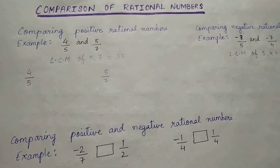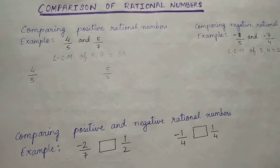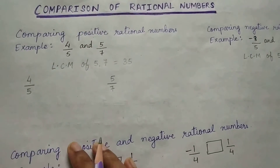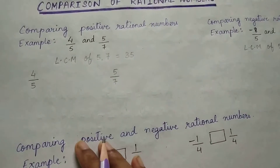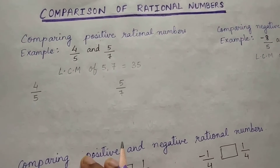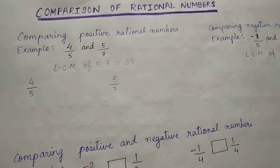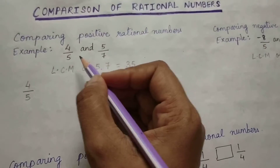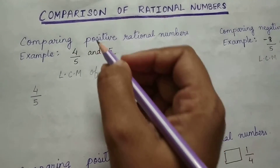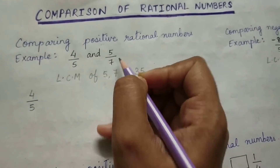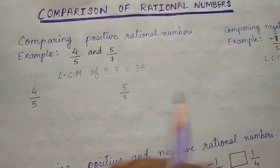Next topic: comparison of rational numbers. How will you compare two rational numbers? First, we are going to learn how to compare two positive rational numbers. You will follow the same method that you have learned for comparing two fractions. See the example with 4 by 5 and 5 by 7 — these are two positive rational numbers. Let us compare and find which is greater and which is smaller.